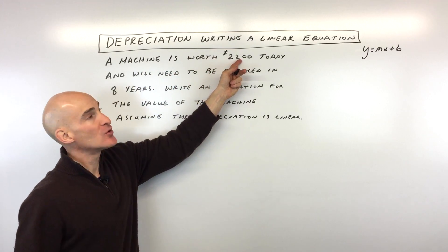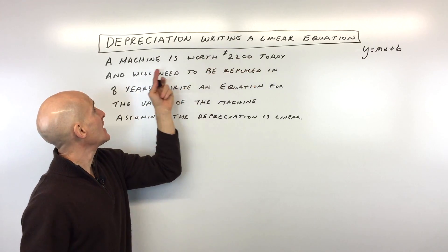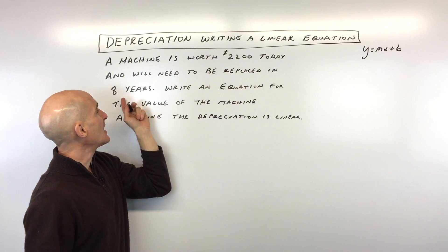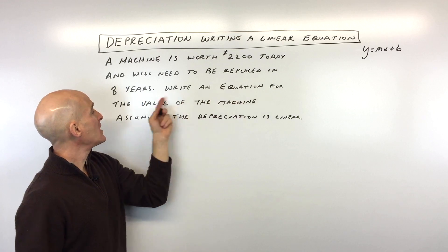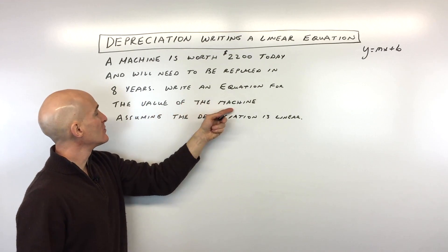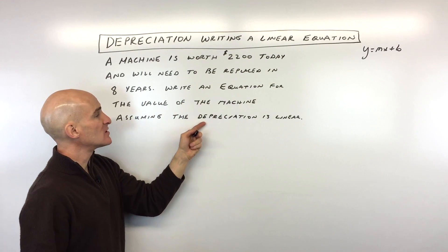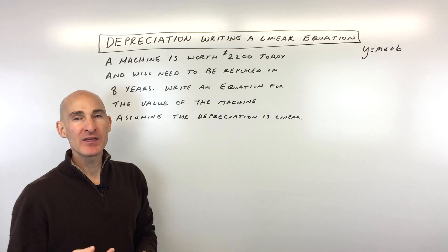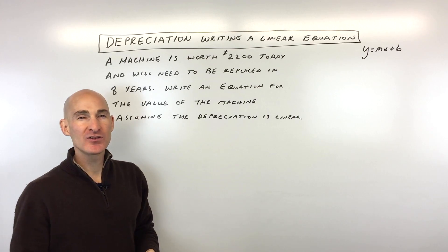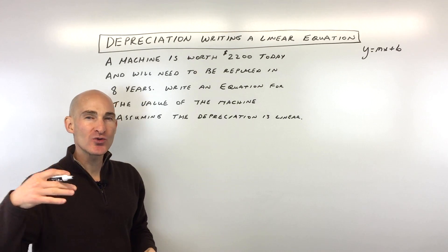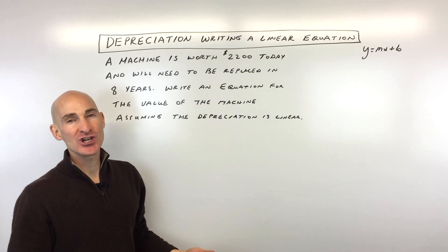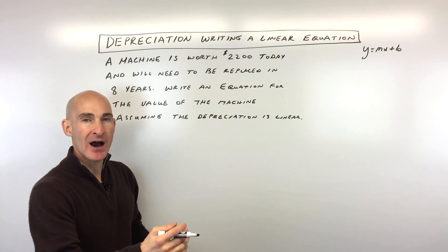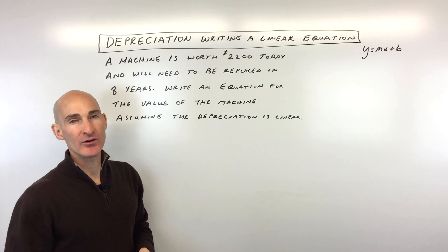The machine is worth $2,200 today and will need to be replaced in eight years. Write an equation for the value of the machine assuming the depreciation is linear. I'm not an accountant, but I think they sometimes refer to this as straight-line depreciation — basically going down at the same rate.